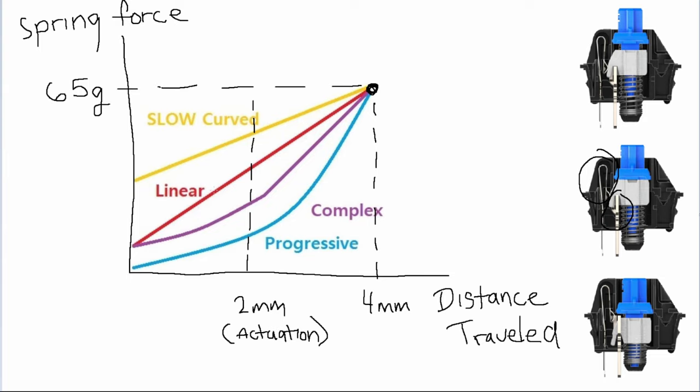Let's take a look at the linear spring in red. This is the most common spring in switches. We can see it's called linear as it's just a straight line from start to finish.